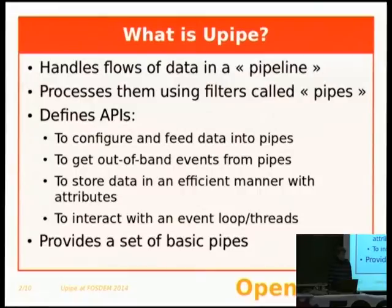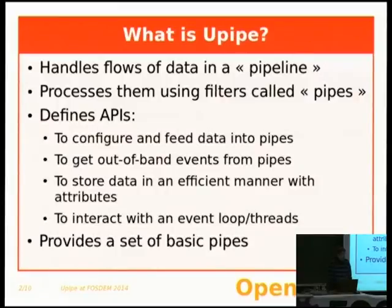U-Pipe also defines an API to allow modules to throw events. What I call events is, for instance, the end of file is reached — what do we do? Or there has been a fatal error — what do we do? Should we terminate the application now? So that's the kind of event a module can throw, and we have an API to catch that.